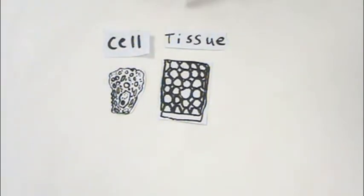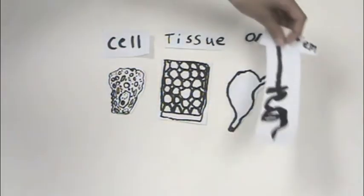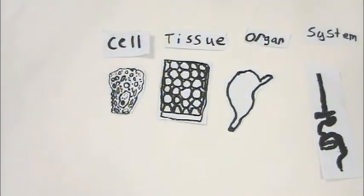Just as cells work together to form tissues that work together to form an organ, organs work together to perform tasks as a system.